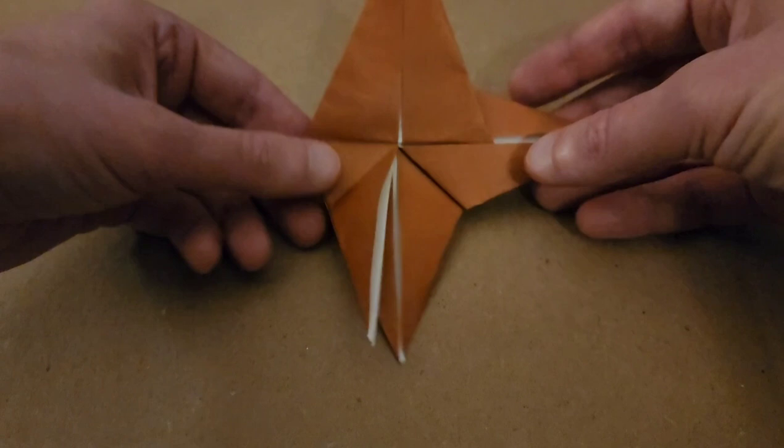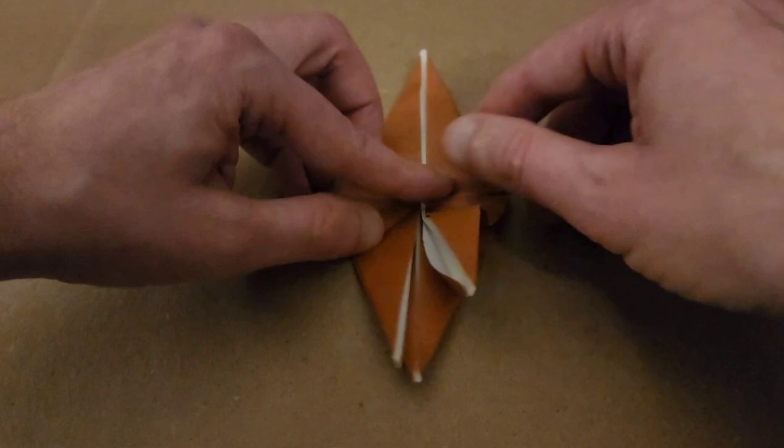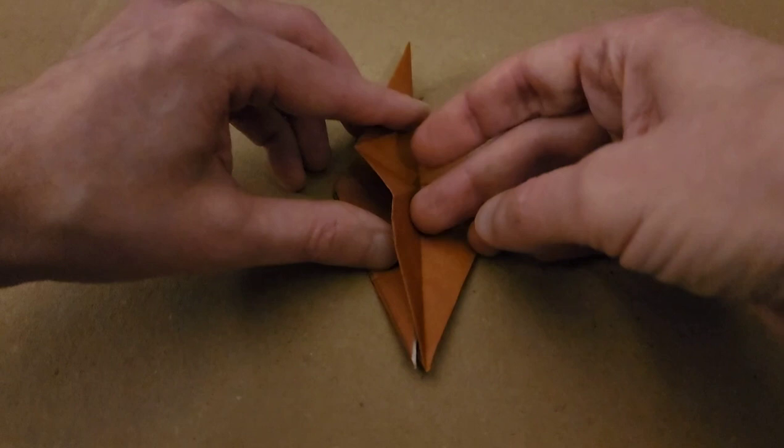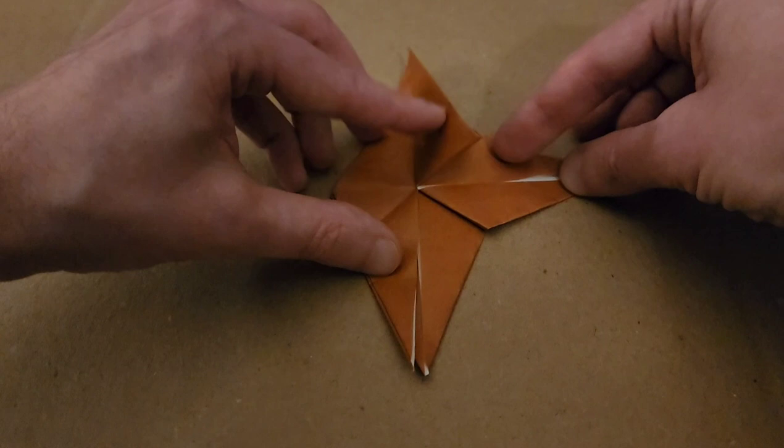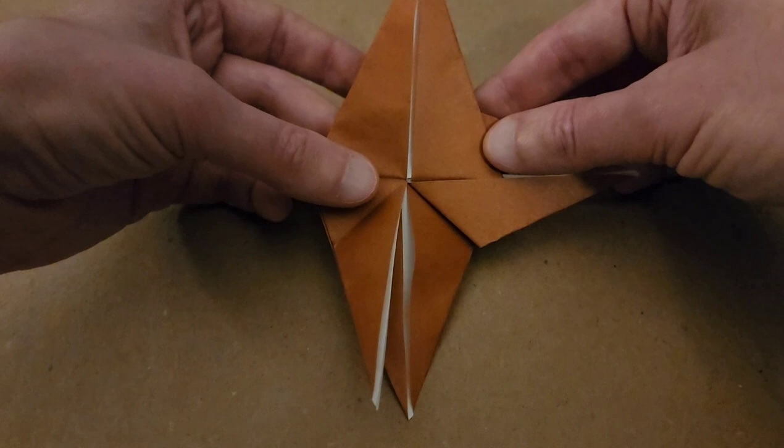So that this new crease goes along that center line. And we'll do this again for the other side. In fact, what I'll do is I'll undo what I just did. So, open it up. Perpendicular. And then down. Like so.